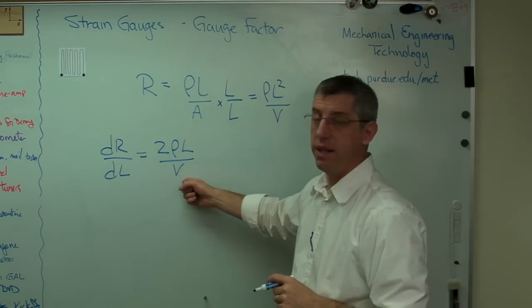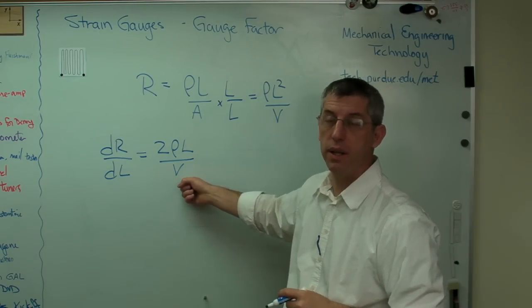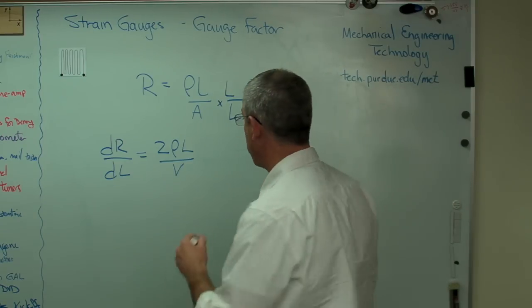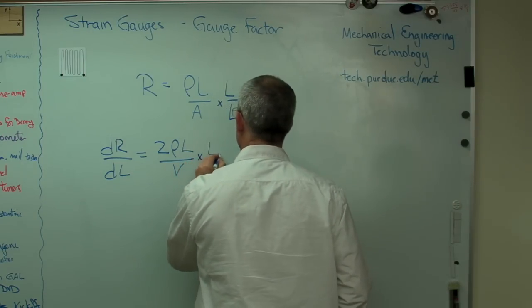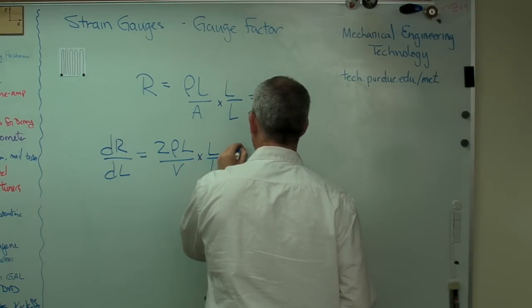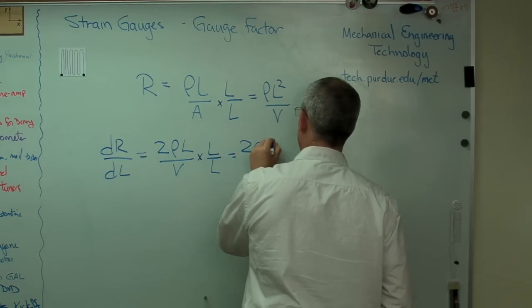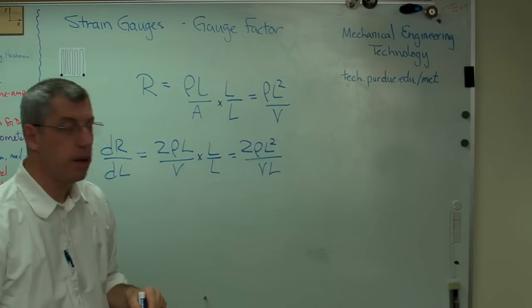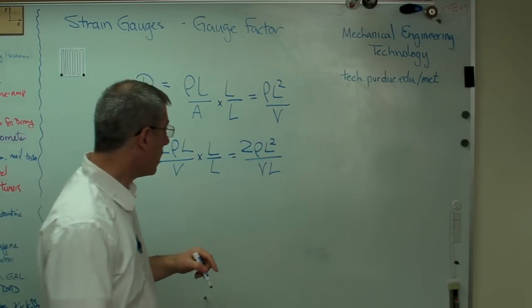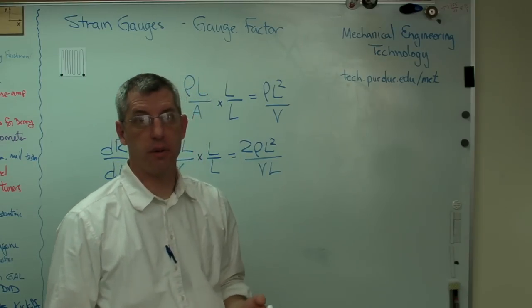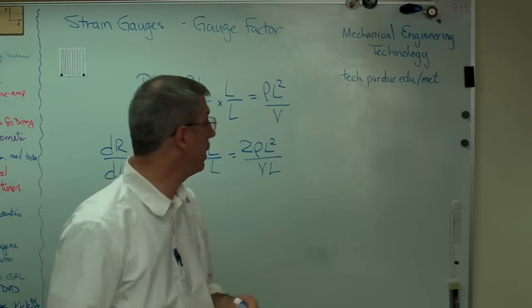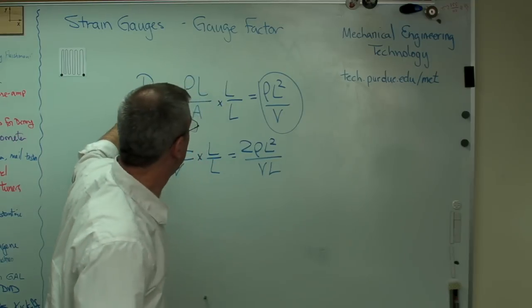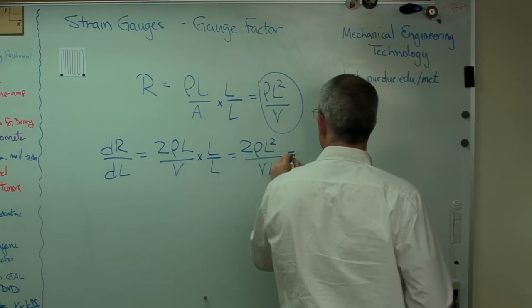Now, it would be nice if I didn't need to know what the volume was. So again, another one of these mathematical steps that clearly works but I'm not sure I would have ever thought of. Let's do this. Multiply by L over L again. So I get two rho L squared over VL. Now, this doesn't look any more useful than it was a second ago, but trust me, it is. Because of that right there, that equals R. So I get to do this. This is where it gets really handy.